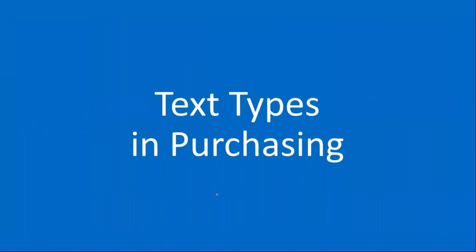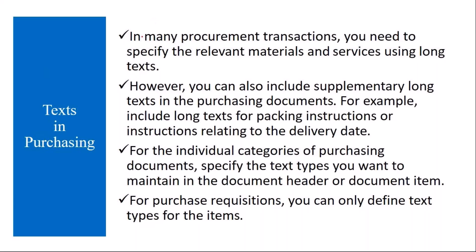We'll start with text types in purchasing. In many procurement transactions, you need to specify relevant materials and services using long text. Normally when you create a purchase order, a request for quotation, a contract, or a scheduling agreement, you enter the material code and get the material description. But sometimes if the material code is not there — for example, if you are procuring a non-stock item — you want to maintain a long text describing it.